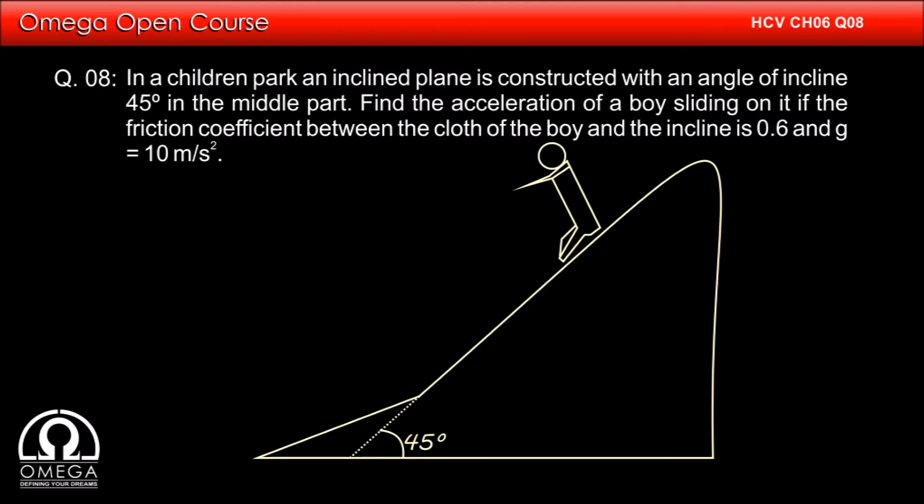In a children's park, an inclined plane is constructed with an angle of incline 45 degrees in the middle part. Find the acceleration of a boy sliding on it if the friction coefficient between the cloth of the boy and the incline is 0.6 and g is 10 meter per second square.